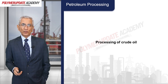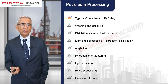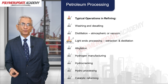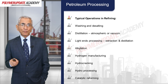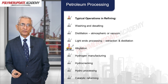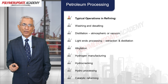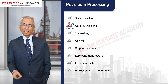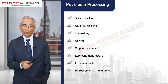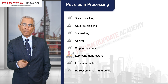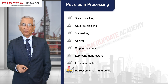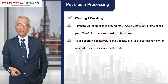Typical operations used in refining are: first, washing and desalting; then distillation — both atmospheric as well as under vacuum; light ends processing; extraction and distillation. Major chemical reactions include alkylation, hydrogen manufacturing, hydrocracking, hydro processing, catalytic reforming, steam cracking, catalytic cracking, visbreaking, and coking.